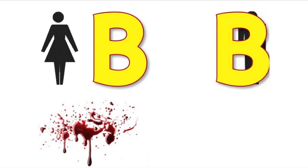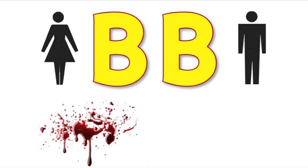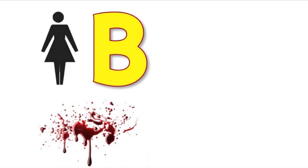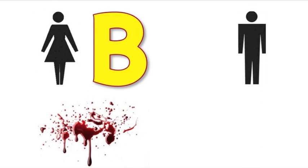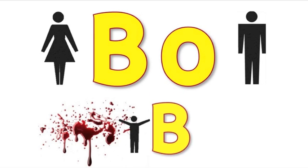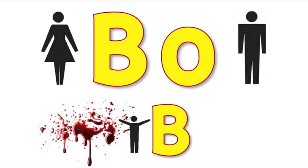Another example continues with inheritance from your mother and father. For example, you could inherit a B from both your mother and father — in this case, you would have blood type B. Another example could be a B from your mother and an O from your father. But remember, O is the recessive blood type, so in this case you would still be blood type B. B is a dominant blood type.